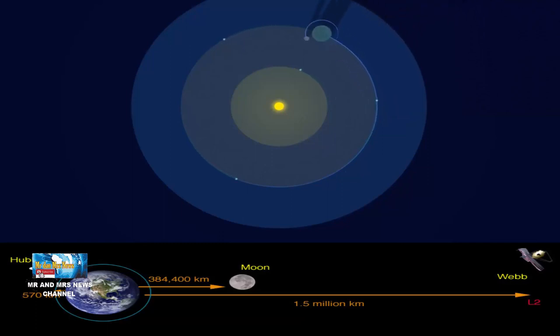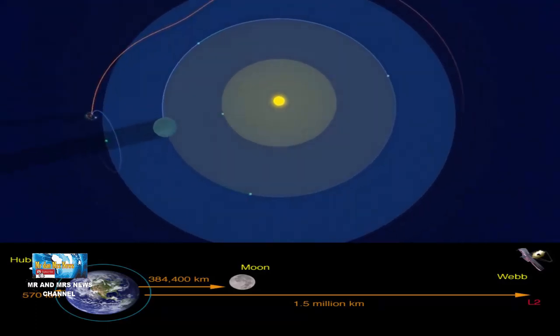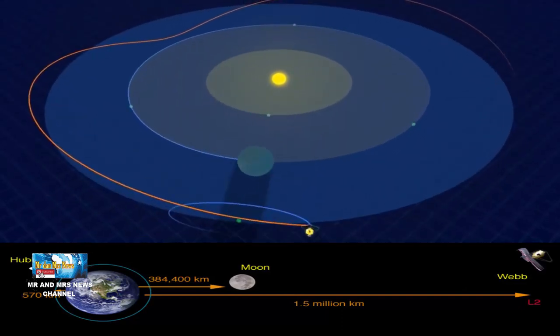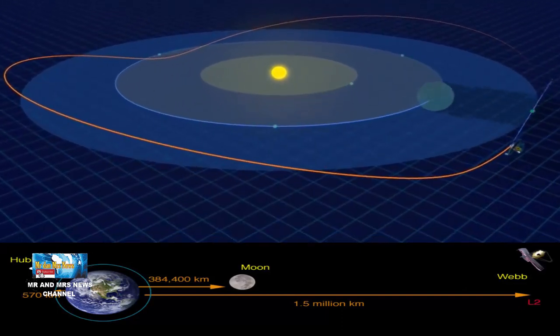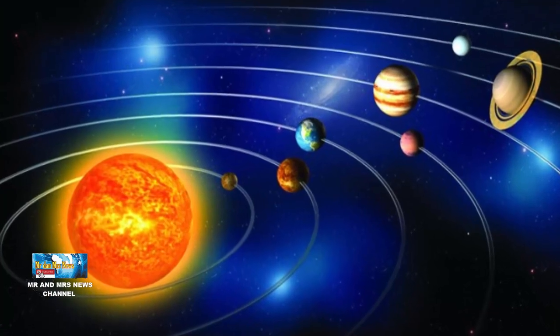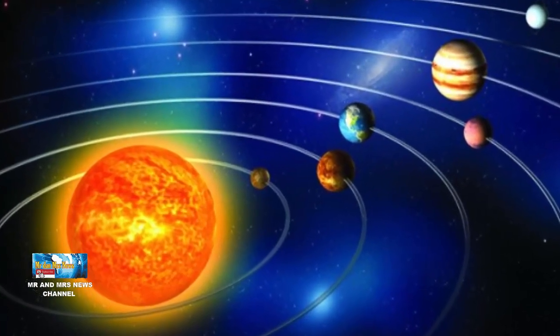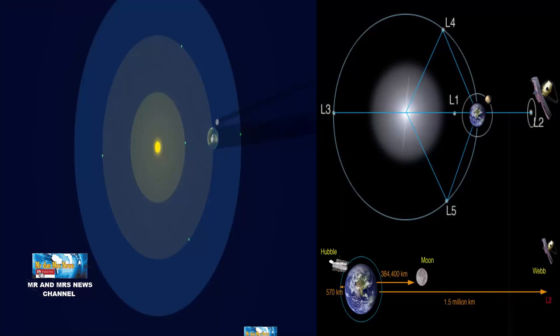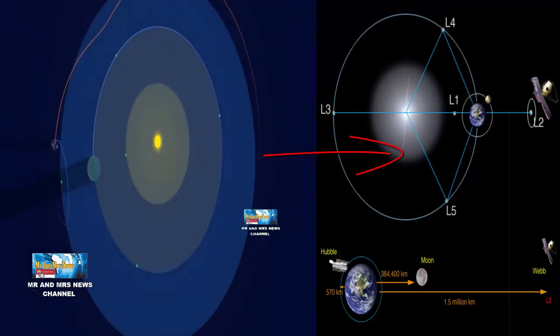Pada titik L2, pelindung matahari Webb akan menghalangi cahaya dari matahari, bumi, dan bulan. Ini akan membantu Webb tetap dingin yang sangat penting untuk teleskop inframerah. Saat bumi mengorbit matahari, Webb akan mengorbit dengannya, tetapi tetap di tempat yang sama dengan hubungannya dengan bumi dan matahari, seperti yang ditunjukkan pada diagram di sebelah ini.